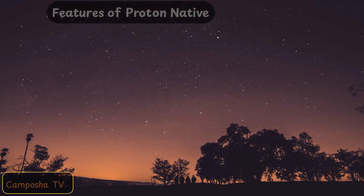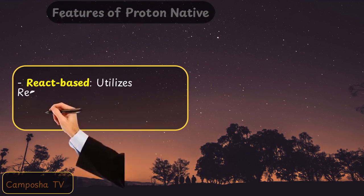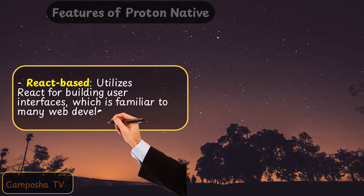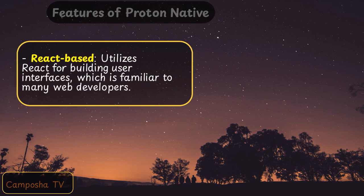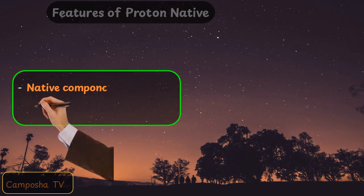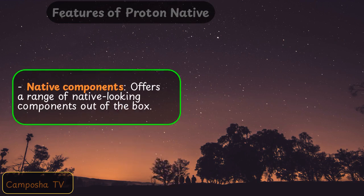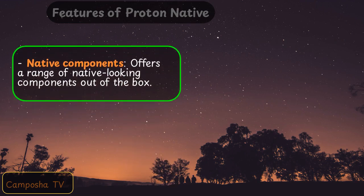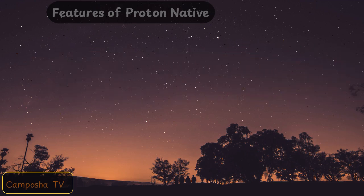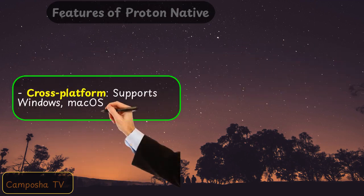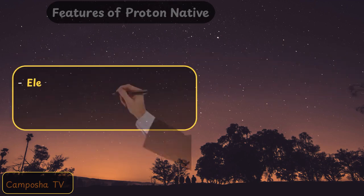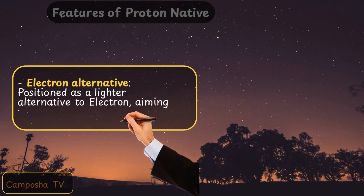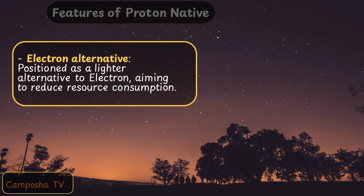Features of ProtonNative: React-based — utilizes React for building user interfaces, which is familiar to many web developers. Native Components — offers a range of native-looking components out of the box. Cross-Platform — supports Windows, MacOS, and Linux. Electron Alternative — positioned as a lighter alternative to Electron, aiming to reduce resource consumption.